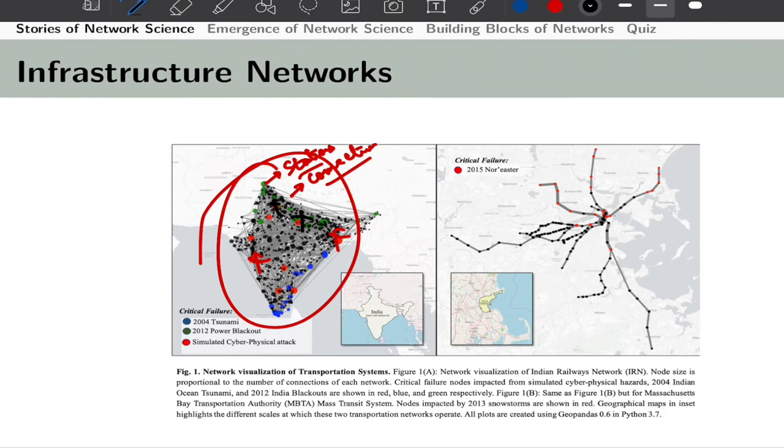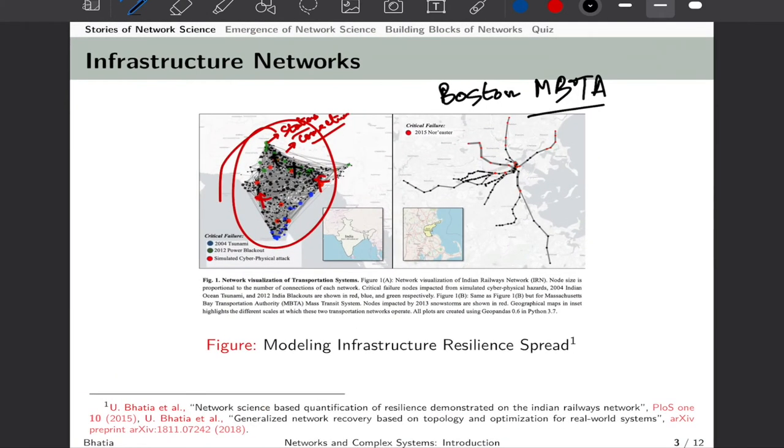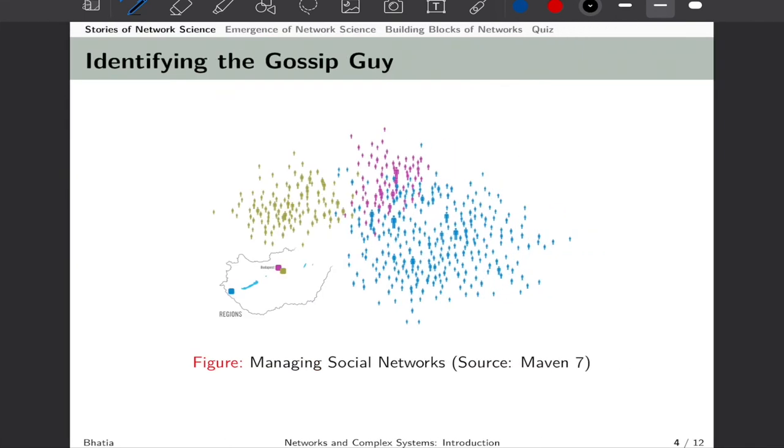Similarly, we model systems at city scale. This is an example from our work on Boston mass transit system, or Boston MBTA, to understand how events like snowstorms that happen in Boston every winter would impact transportation systems and their social consequences. Once these systems are crippled, what is the best and optimal strategy to restore them in minimal time? I have included references to these figures in the slides.